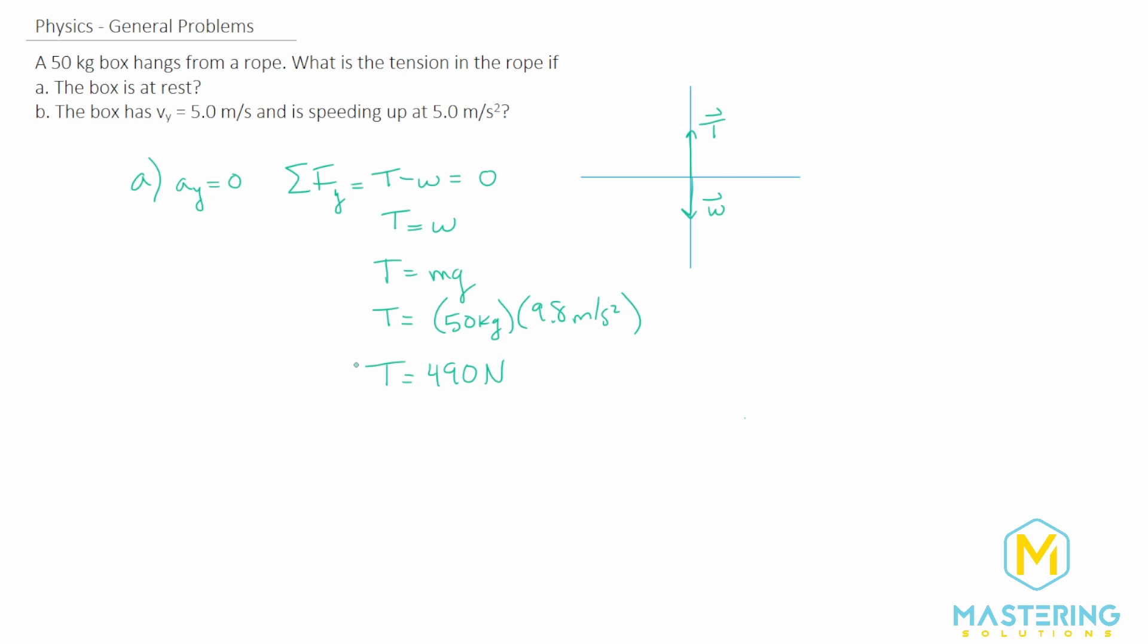So now when we go to part B, we need to figure out what the tension in the rope is if it's moving. The thing is, we don't really care what the velocity in the y direction is, that has no bearing on this question. All we care about is the acceleration. So this is really just a distraction to confuse you.